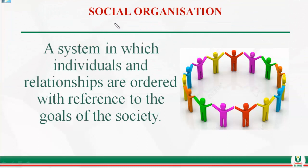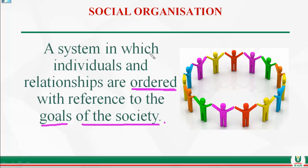Social organization is a system in which individuals and relationships are ordered. Simply put, it is the ordering of individuals and relationships with reference to the goals of society.